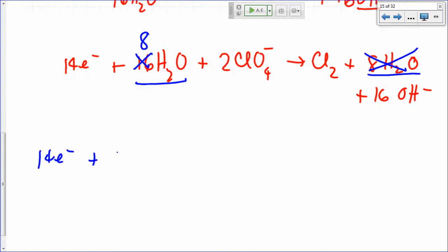So that's a final answer here. You would have 14 electrons plus 8 H2O plus 2 perchlorates yields Cl2 plus 16 hydroxides. That's your balance equation. Let's verify that it is, in fact, balanced.